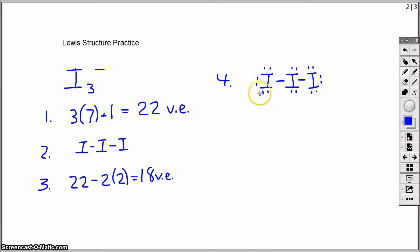And with this structure, I have satisfied the octet rule for all three iodine atoms. But notice that of the original 22 valence electrons that I started with, up to this point I've only used two, four, six, eight, ten, twelve, fourteen, sixteen, eighteen, twenty, meaning that I have two valence electrons that I have yet to assign.